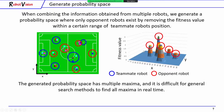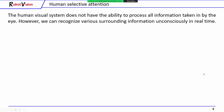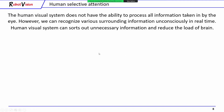The generated probability space has multiple maxima, and it is difficult for general search methods to find all the maxima in real time. So here, we adopted the concept of human selective attention to find all the maxima in real time. The human visual system does not have the ability to process all information taken by the eye. However, we can recognize various surrounding information unconsciously in real time, because the human visual system can throw out unnecessary information and reduce the load on the brain. We call this selective attention.